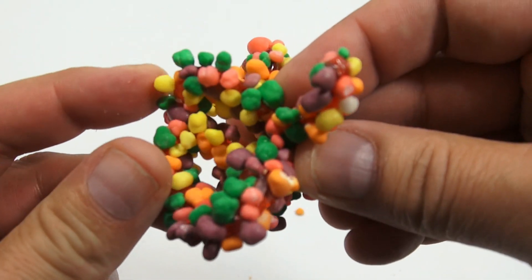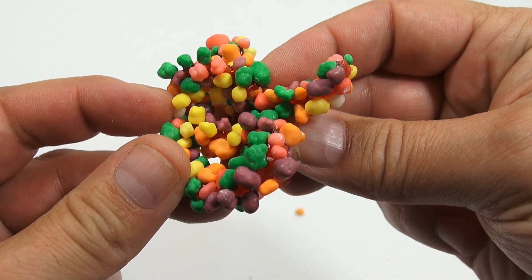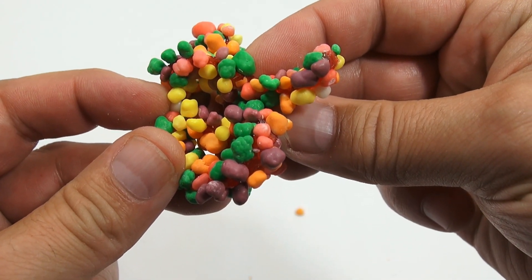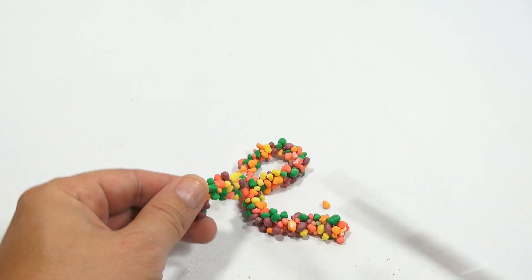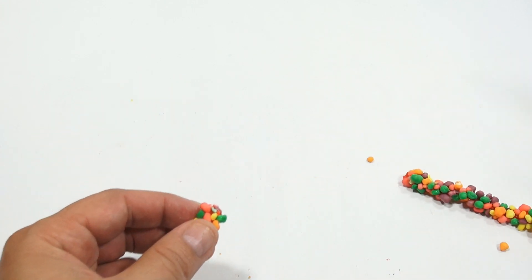So imagine putting that whole piece into your mouth. That would be tough. I mean, it would be easy to put in your mouth, but chewing through that would be difficult. Cut some more of my rope off here. Ooh, stuck to my scissors.